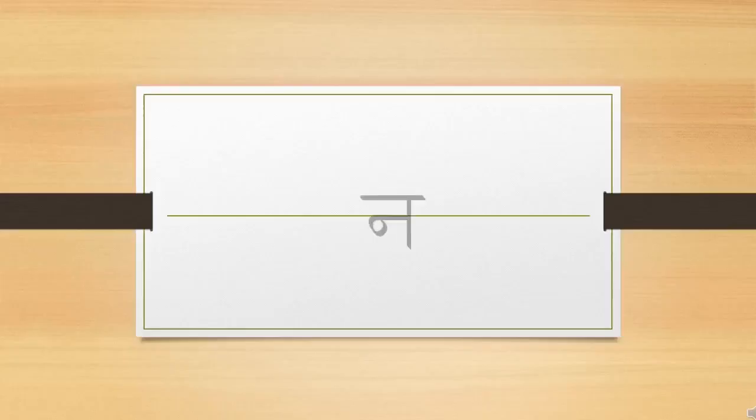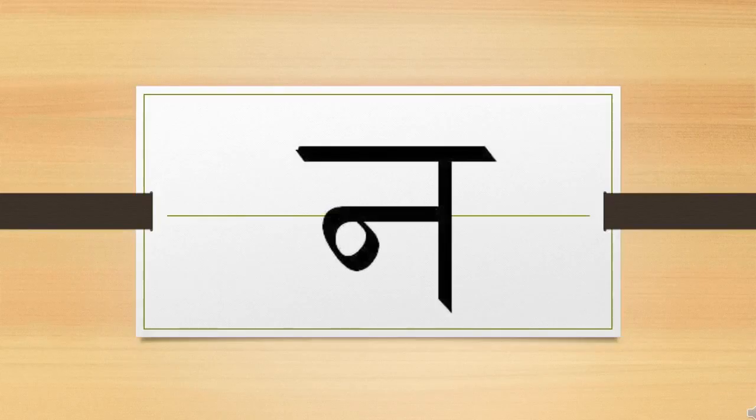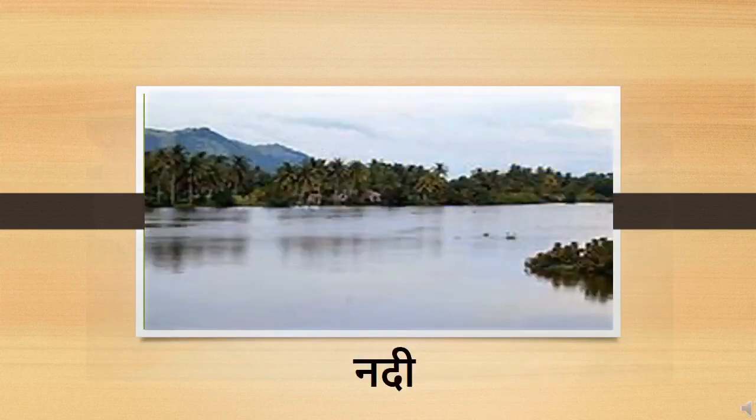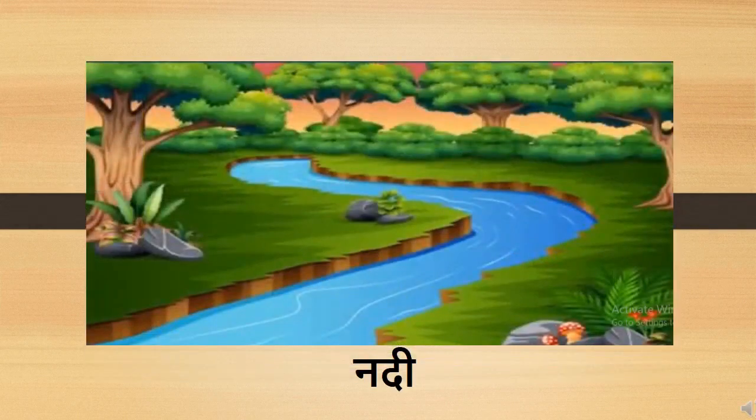Let's see words starting with Vyanjan Na. Children, this is Vyanjan Na. Na. You are going to repeat after me. Na. Na say Nadi. Na say Nadi. Nadi means river.